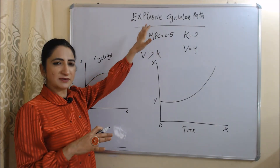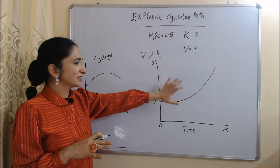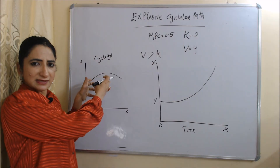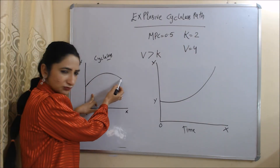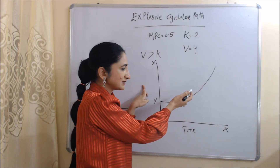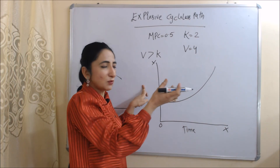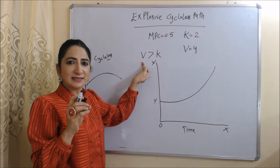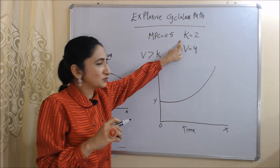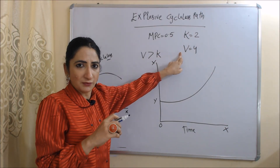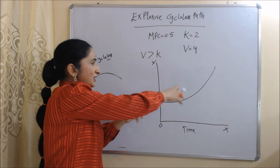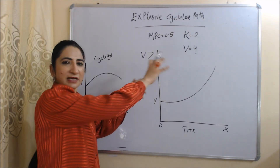Now we talk about the explosive cycleless path. Like the cycleless path, the economy will not produce any kind of cycle. However, while the trend of the cycleless path is downward, the trend of the explosive cycleless path is upward, because these cycles are very explosive. This happens because the value of the accelerator is extremely high compared to the multiplier — multiplier is 2 but accelerator is 4. That is why the economy produces an explosive upward path.